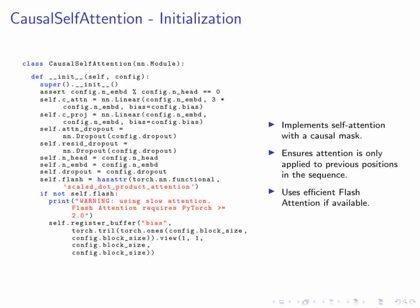In the forward method, we take the input tensor and apply layer normalization using PyTorch's functional layer_norm, scaling the input by the weight and optionally shifting it by the bias. Next, let's dive into the Causal Self-Attention class. This class implements self-attention with a causal mask, meaning each position can only attend to previous positions. When initializing this class, we ensure the embedding dimension N_EMBD is divisible by the number of attention heads N_head. The C_ATTN layer projects the input into query, key, and value vectors, each of size N_EMBD, and can include a bias if needed. The C_project layer then projects the attention output back to the original embedding dimension. We also have dropout layers for regularization to prevent overfitting.